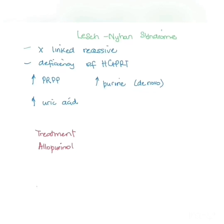The last disease we're going to look at today is Lesch-Nyhan syndrome. This is an X-linked recessive disease which causes a deficiency of HGPRT. HGPRT is used in the salvage pathway to convert PRPP to nucleosides. If there is a decrease in HGPRT levels, this will cause an increase in PRPP. An increase in PRPP means there is an increase in the synthesis of purine by the de novo pathway. Increased purine level will also cause an increase in uric acid due to degradation. For treatment, we use allopurinol, an inhibitor of xanthine oxidase, which converts hypoxanthine to xanthine or xanthine to uric acid. With this treatment, we expect a decrease in uric acid level. However, there will still be an increase in PRPP.